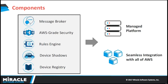Next is the rules engine, which is responsible for routing. You can write your own rules — for example, you can write a rule to turn on the AC when the temperature of the room reaches 30 degrees. Those kinds of conditional rules can be written in the rules engine. Then moving on to device shadow, which I'll talk about in a later slide.